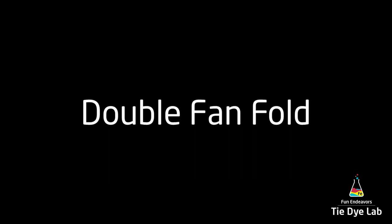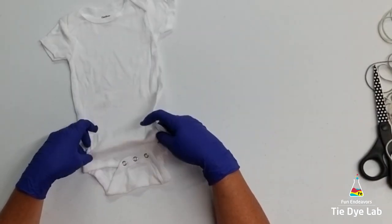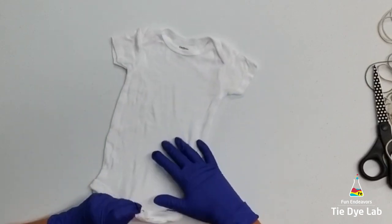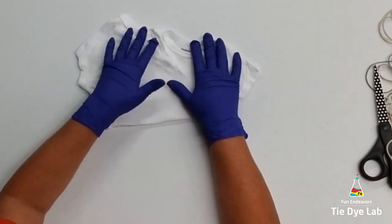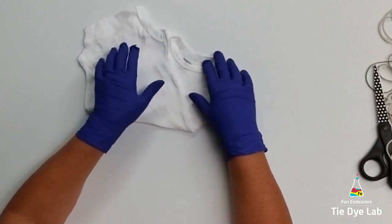Our final onesie is a double fan fold. So to begin, I'm taking my onesie and I'm going to fold one corner up to the shoulder of the onesie. So it's basically folded in half diagonally.